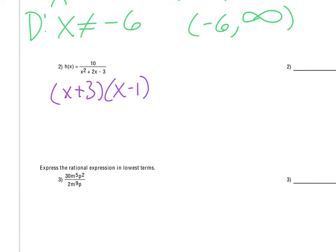So really then, the restrictions on the denominator is that x cannot be negative 3 because that would make the denominator 0, and x also cannot be a positive 1. So again, those are the domain restrictions.